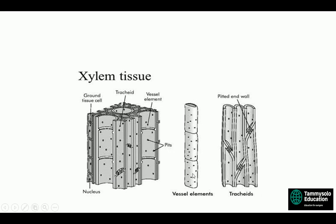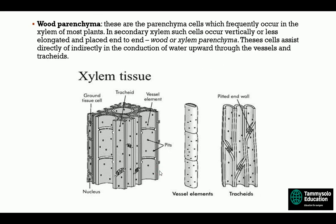The vessel elements joined together form the full vessel structure. Wood parenchyma cells frequently occur in the xylem of most plants. In secondary xylem, such cells occur vertically or are less elongated and placed end to end. These wood or xylem parenchyma cells assist directly or indirectly in the conduction of water upward through the vessels and tracheids.